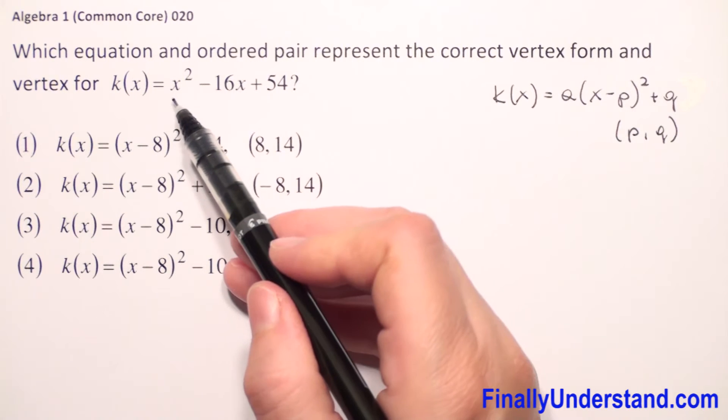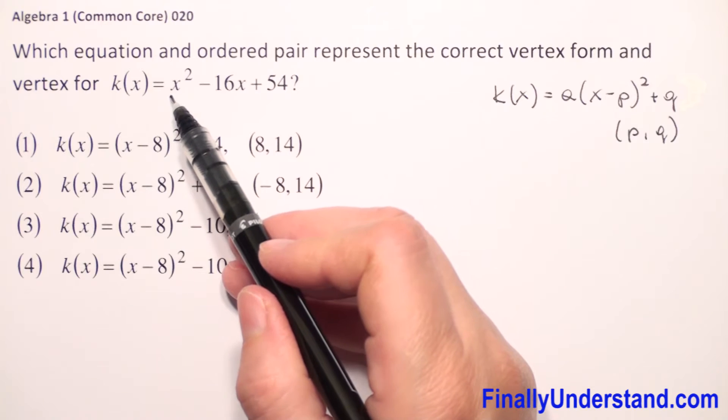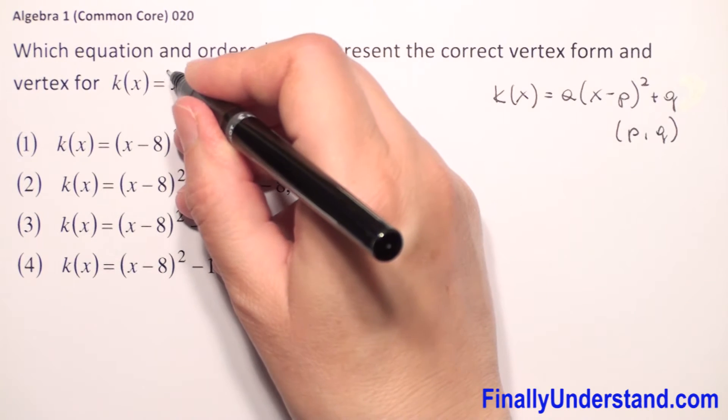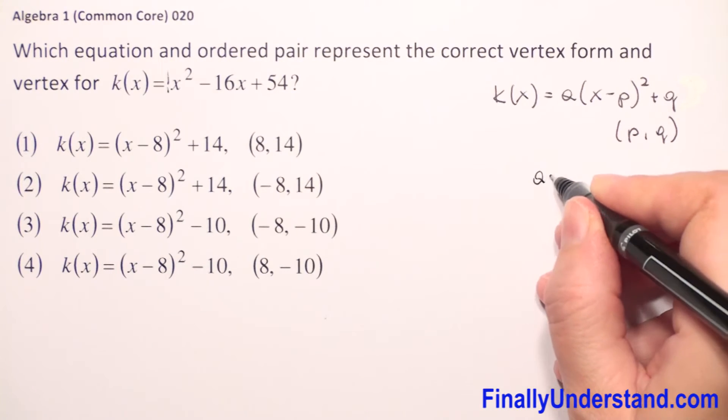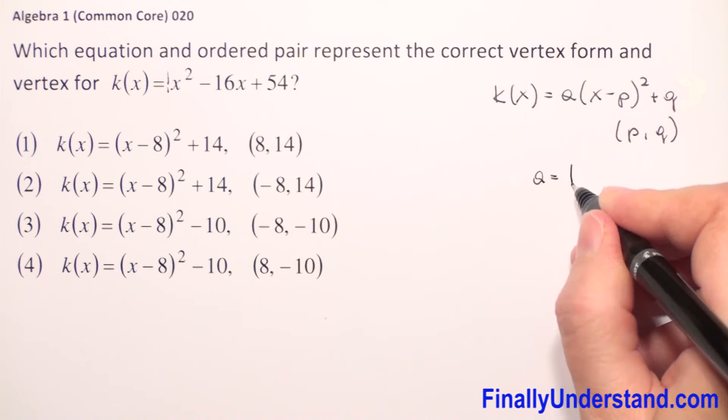In our example, before x squared, we don't have any coefficient. It's invisible, it's 1. So the coefficient a before x squared is 1.